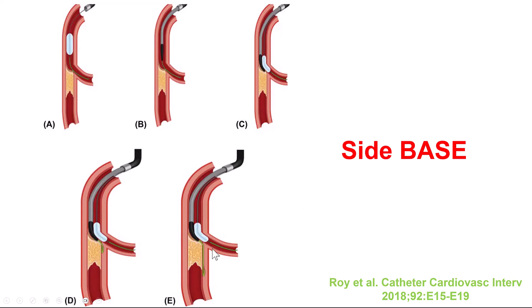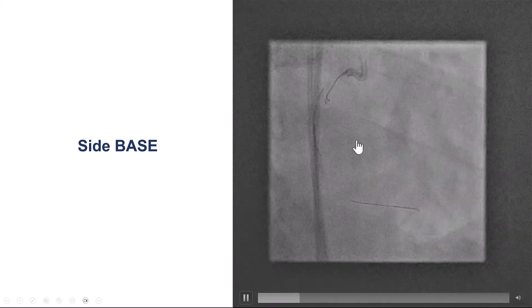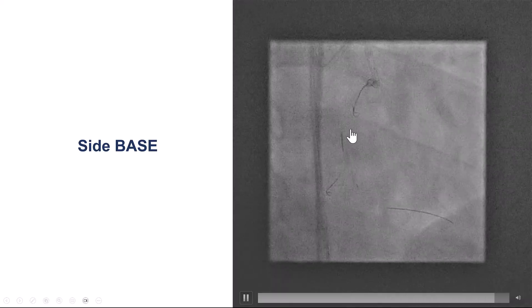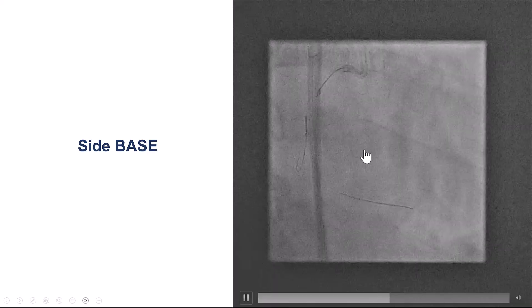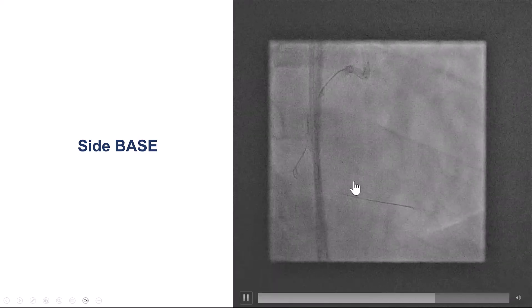To get out of the side branch and into the main vessel, we used the Side BASE technique — very similar to BASE, but the balloon is placed halfway into the main vessel and halfway into the side branch that was entered with the previous wire. This prevents another wire from following the side branch pathway and instead directs it down the extra-plaque space in the main vessel. We brought in a Sasuke, introduced a second guide wire, and inflated a 2.0 mm balloon inside the acute marginal branch. The knuckle formed and moved along the course of the vessel — a successful Side BASE technique.